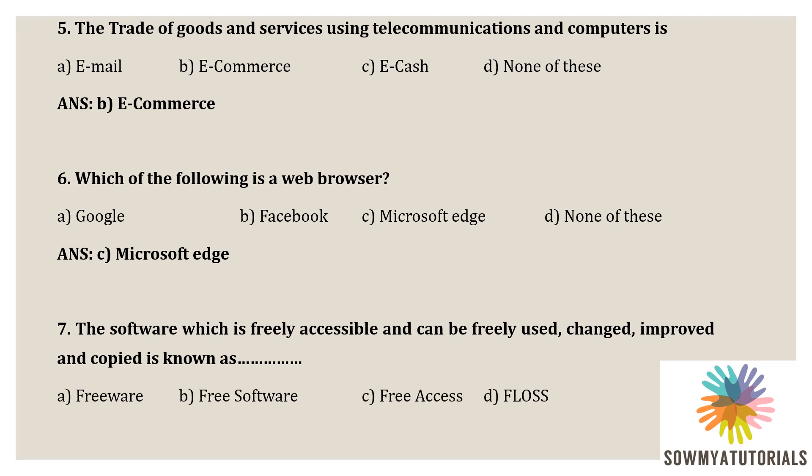The next question is: software which is freely accessible and can be freely used, changed, improved, and copied is called what? Options: A) Freeware, B) Free Software, C) Free Access, D) FLOSS. The correct answer is B) Free Software. Free Software is software which is freely accessible and can be freely used, changed, improved, and copied.